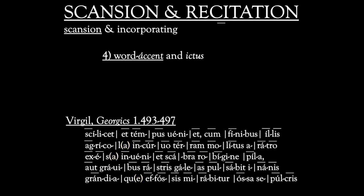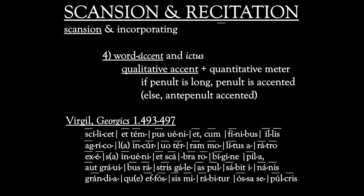The fourth step is to incorporate word accent or stress and metrical beat or ictus. The interaction between qualitative accent and quantitative meter is a big part of the musicality of classical Latin poetry. The rule for stress placement in Latin is simple: if the penult — the next-to-last syllable of a word — is long, then that long penult is stressed. If the penult is short, the antepenult — the before-the-next-to-last syllable — if it exists, takes the stress.